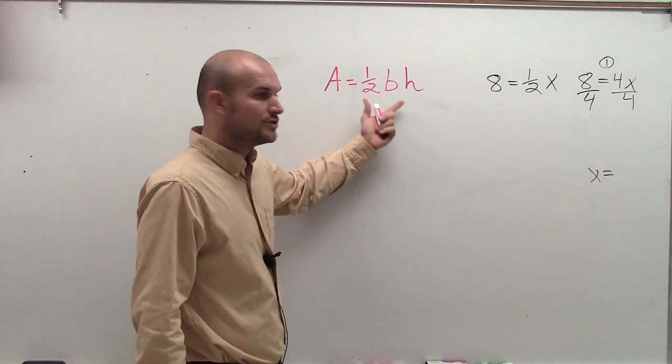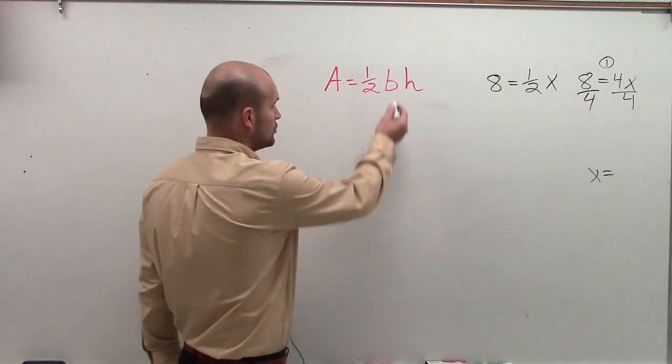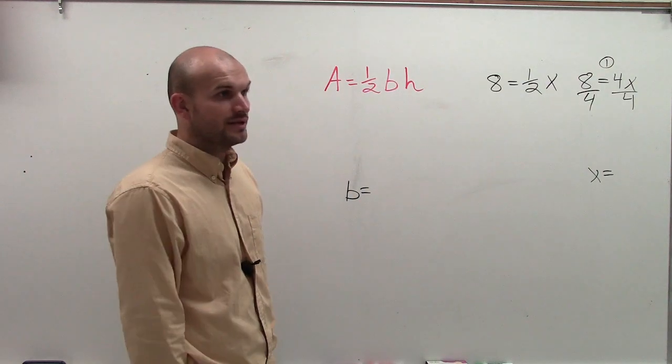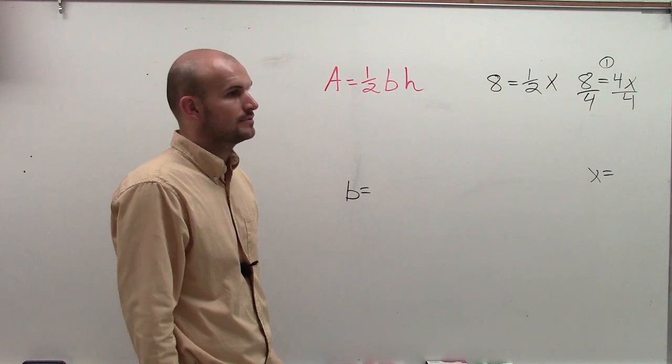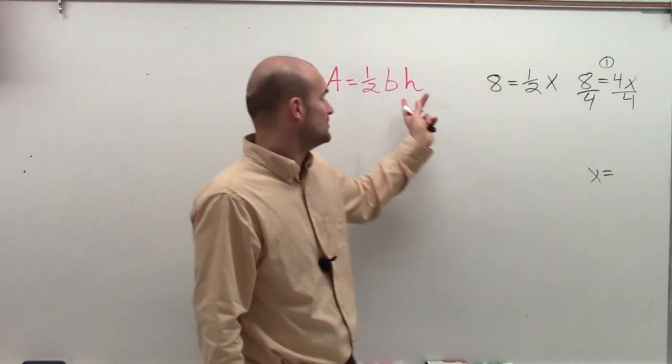Now, over here, do we have a number or a letter that's multiplied by our b? Because our whole goal, we're solving for b. We want to get b by itself. So would you have a number that's being multiplied by b? H. H, right? So what do you think, parallel to solving that problem, you would do with h?